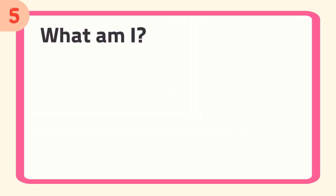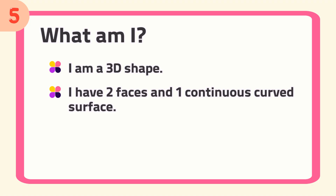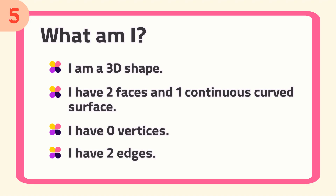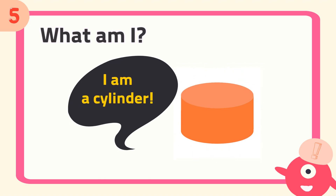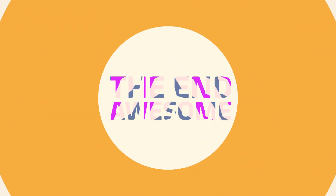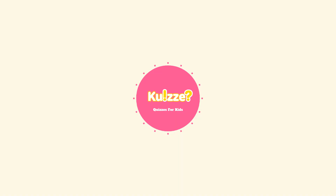Number 5. What am I? I am a 3D shape. I have 2 faces and 1 continuous curved surface. I have 0 vertices. I have 2 edges. The answer is... I am a cylinder.